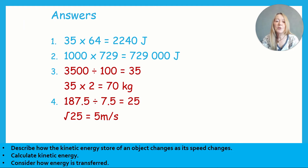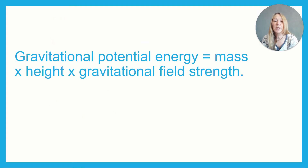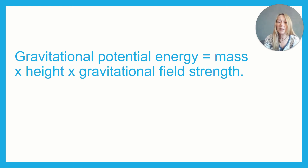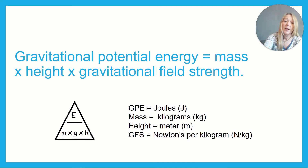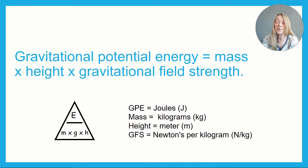Now let's look at the gravitational potential energy equation. Gravitational potential energy equals mass times height times gravitational field strength. In most exam questions, gravitational field strength is taken as 10. Units: gravitational potential energy is in joules, mass is in kilograms, height is in metres, and gravitational field strength is in newtons per kilogram.